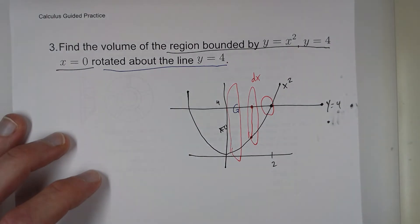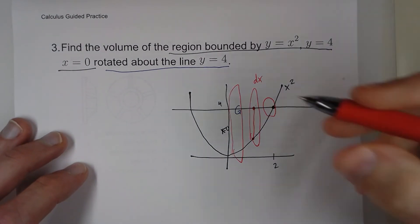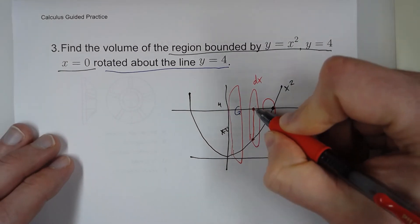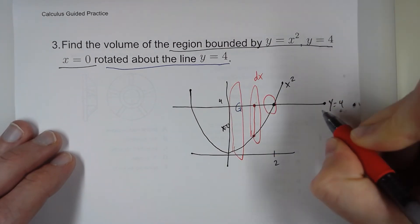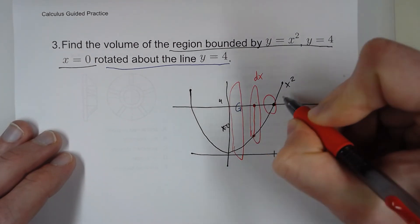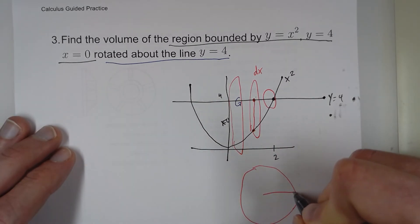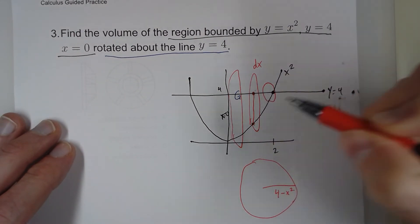And then take the top and subtract the bottom, because we're finding the difference between these two. So this is y equals 4, and this is y equals x squared. So our radius is that, 4 minus x squared. Take the top minus the bottom.